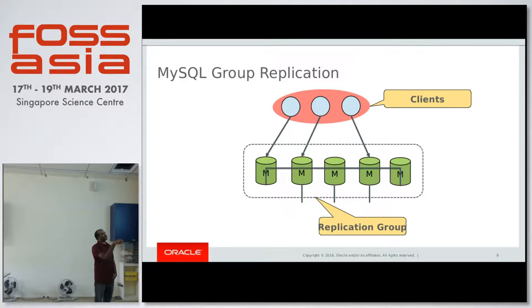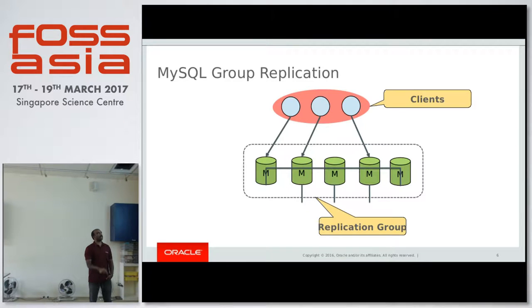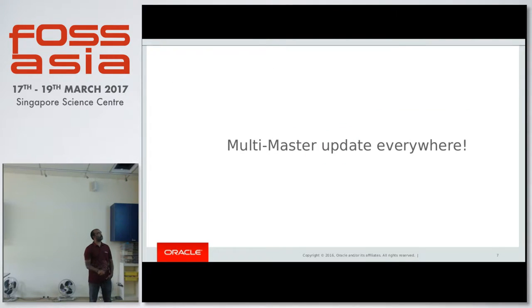We call these five masters as one group — that's what we call a group. That's the reason we call it group replication. All of them can connect to clients; all clients can connect to any of the masters. We call this a replication group.